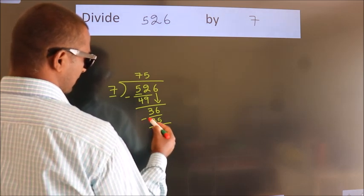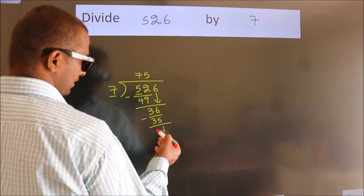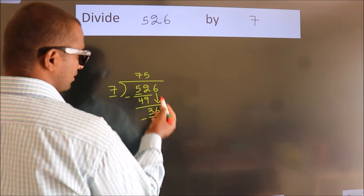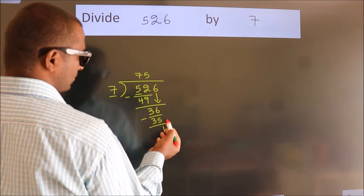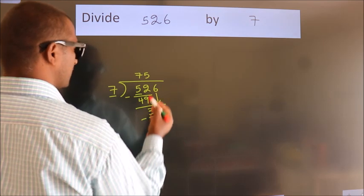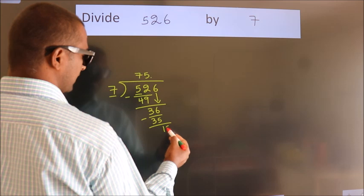Now, we subtract. We get 1. After this, no more numbers to bring it down. So, what we do is, we put dot, take 0.